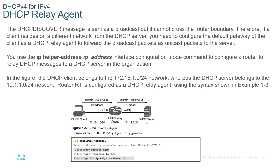In the case that the DHCP server is not on the same local network, we can set the router to forward these messages. Remember your Discover message is a broadcast, and the default action of a router is to deny forwarding broadcast messages. So the router will convert the broadcast to a specific unicast message and send it directly to a registered server. To register this server we use the command: ip helper-address followed by the IP address of the server.